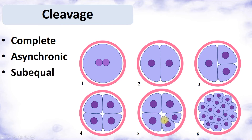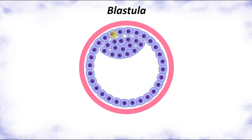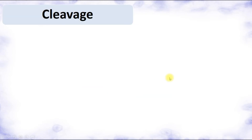The third characteristic of human cleavage is that it is sub-equal. In some animals cleavage is equal — all blastomeres are exactly the same — and in others it is unequal with some cells big and some small. In human embryogenesis it is sub-equal: cells are almost the same but not identical. The result of cleavage is a blastula, which has a blastocoel cavity, a wall made of blastomeres, and is surrounded by zona pellucida.